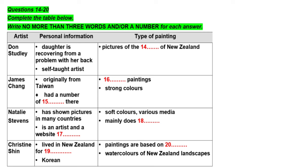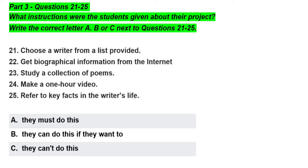That is the end of section 2. You now have half a minute to check your answers. Now turn to section 3 on page 12. Section 3. You will hear two students discussing a project they have to do as part of a literature course on great books. First, you have some time to look at questions 21 to 25 on page 12.